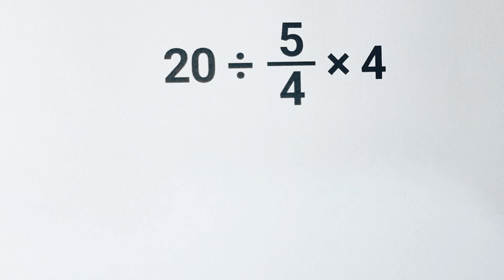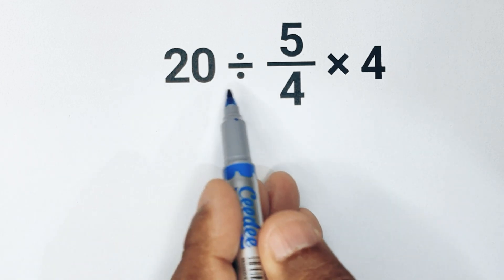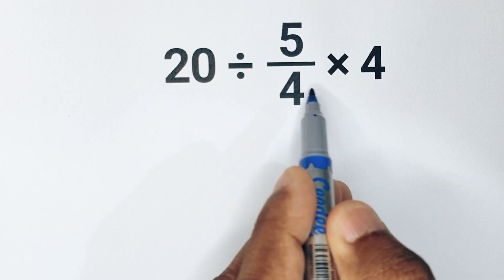Hello everyone, in this video we are going to find the value of this expression: 20 divided by 5 over 4 times 4.